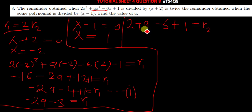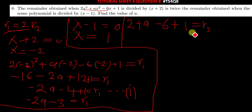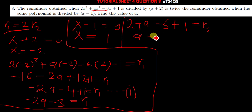Simplifying: negative 6 plus 1 is negative 5, and then 2 minus 5 gives us negative 3. So we have 2 plus a minus 6 plus 1, which simplifies to a minus 3, equal to r2. Wait — negative 3 plus a gives us r2 as a minus 3.